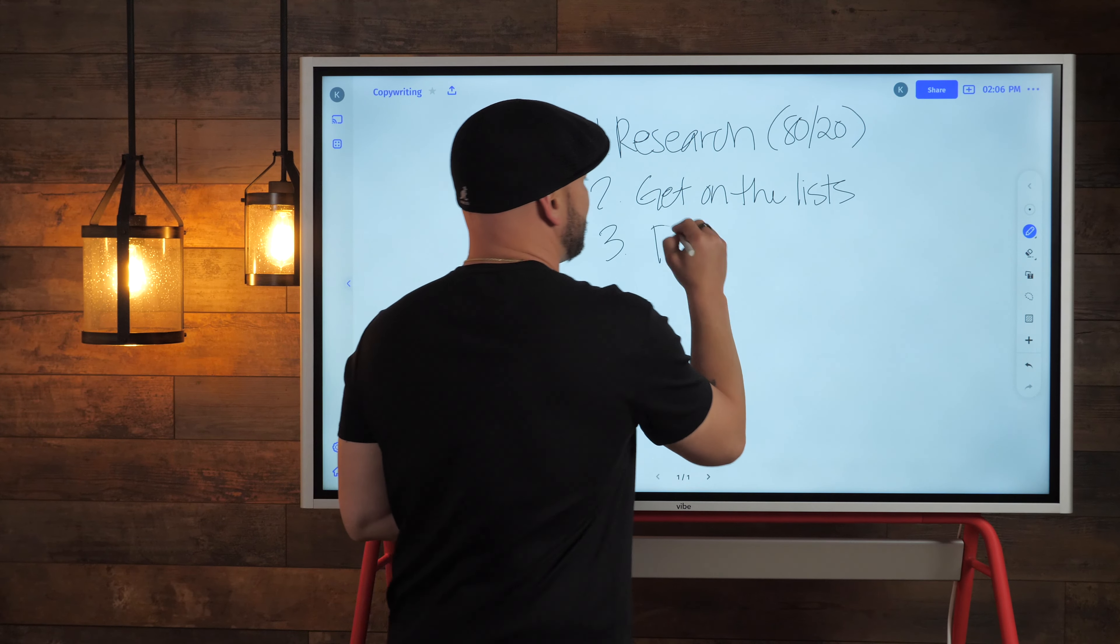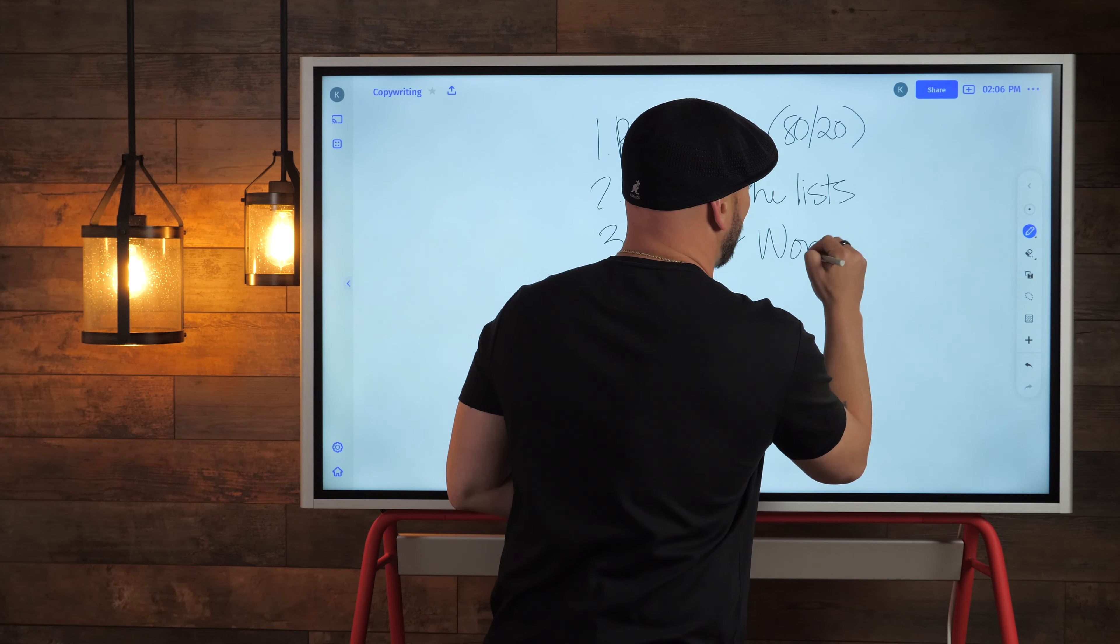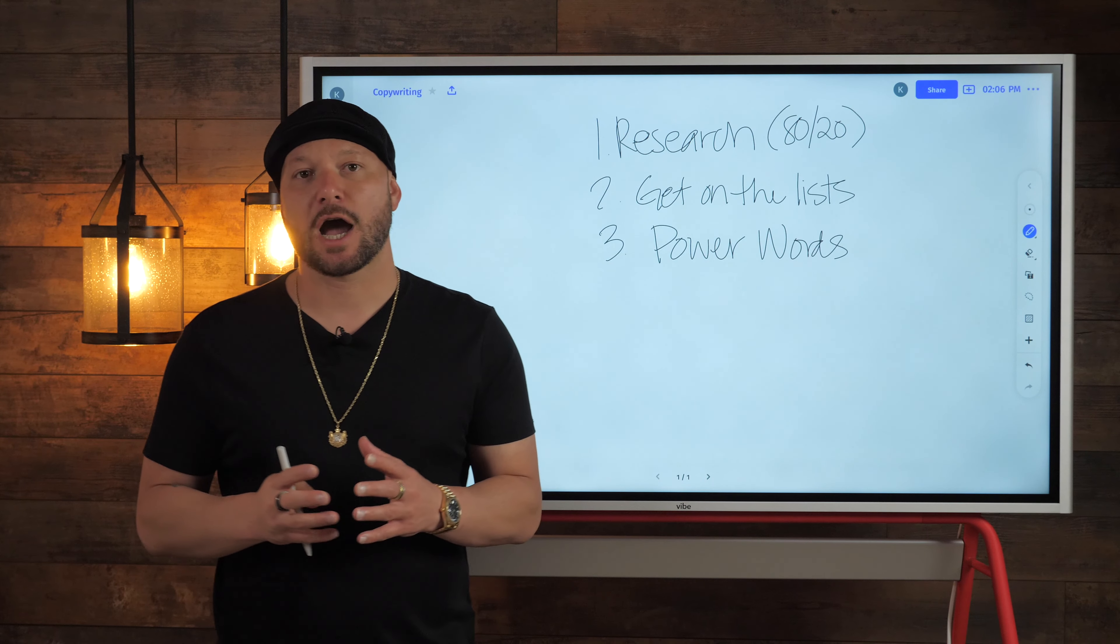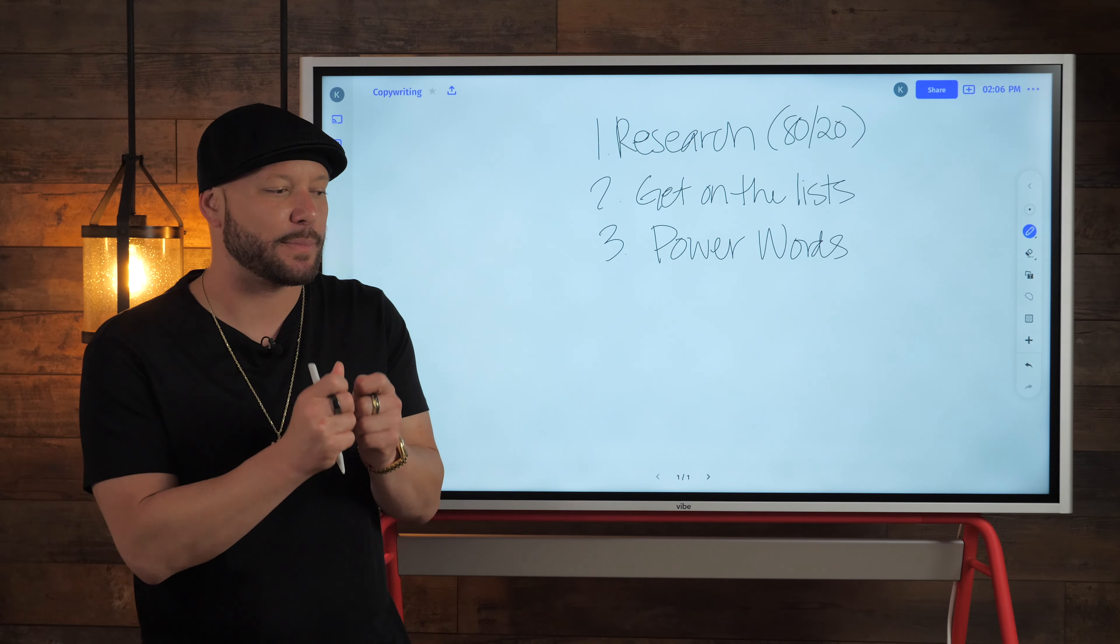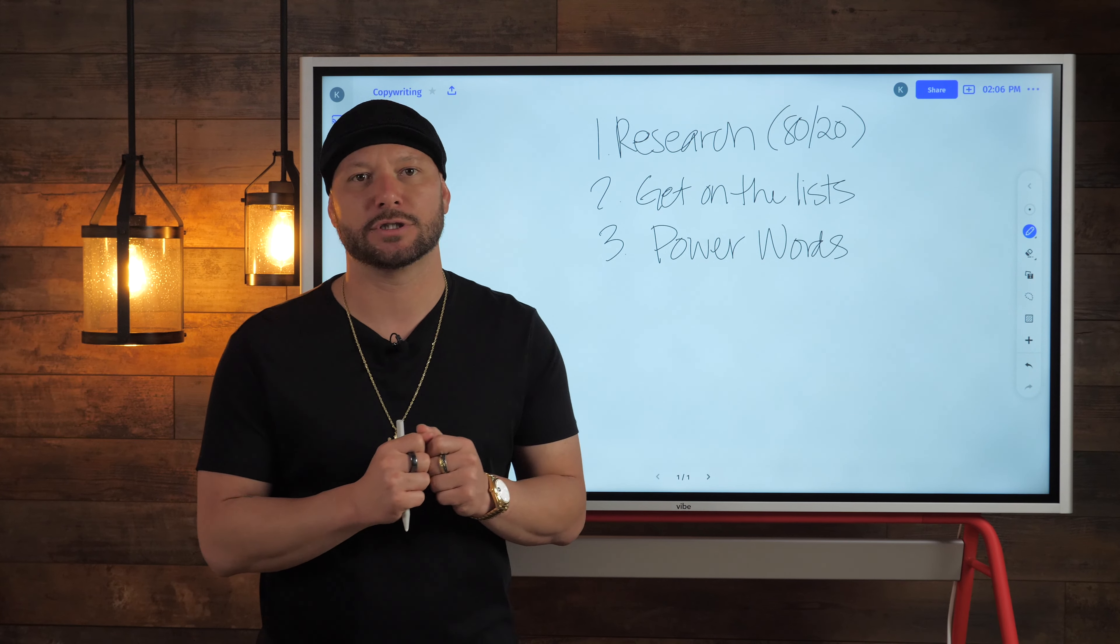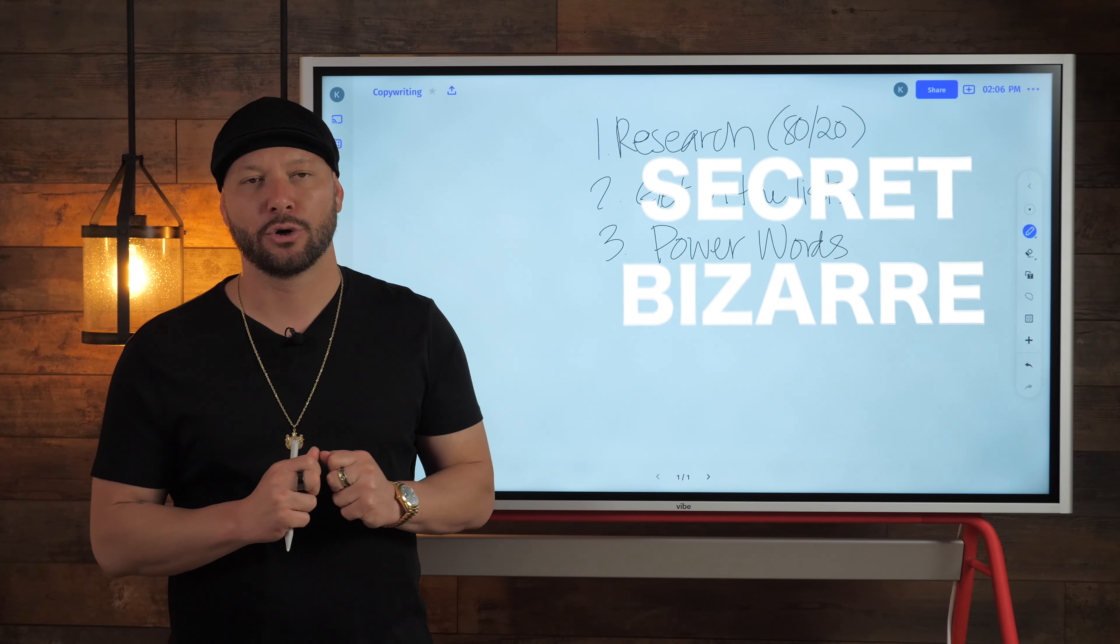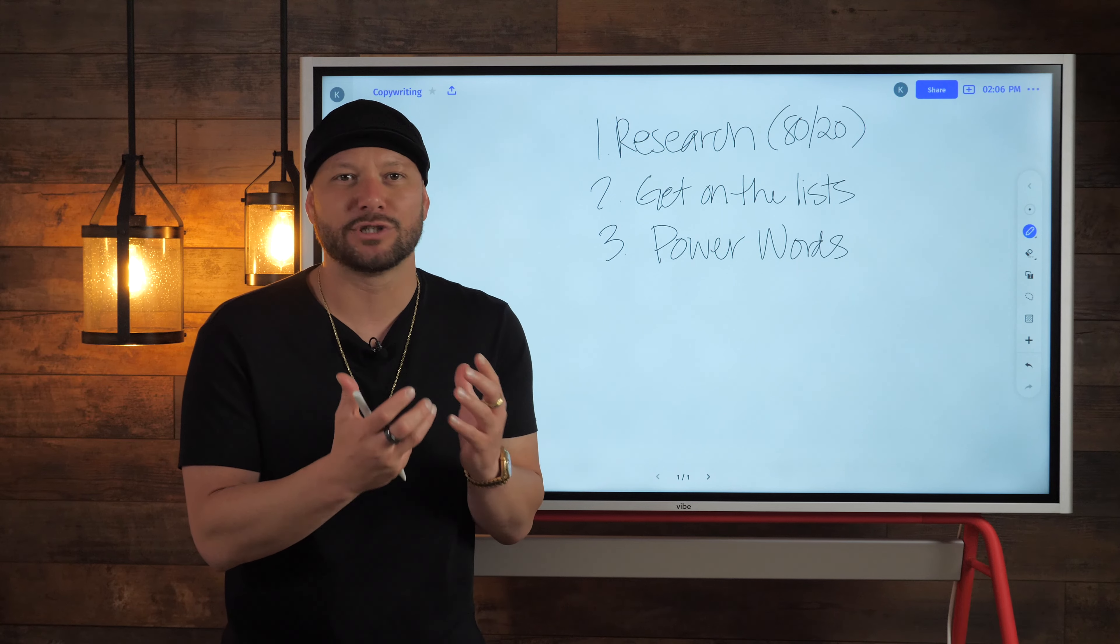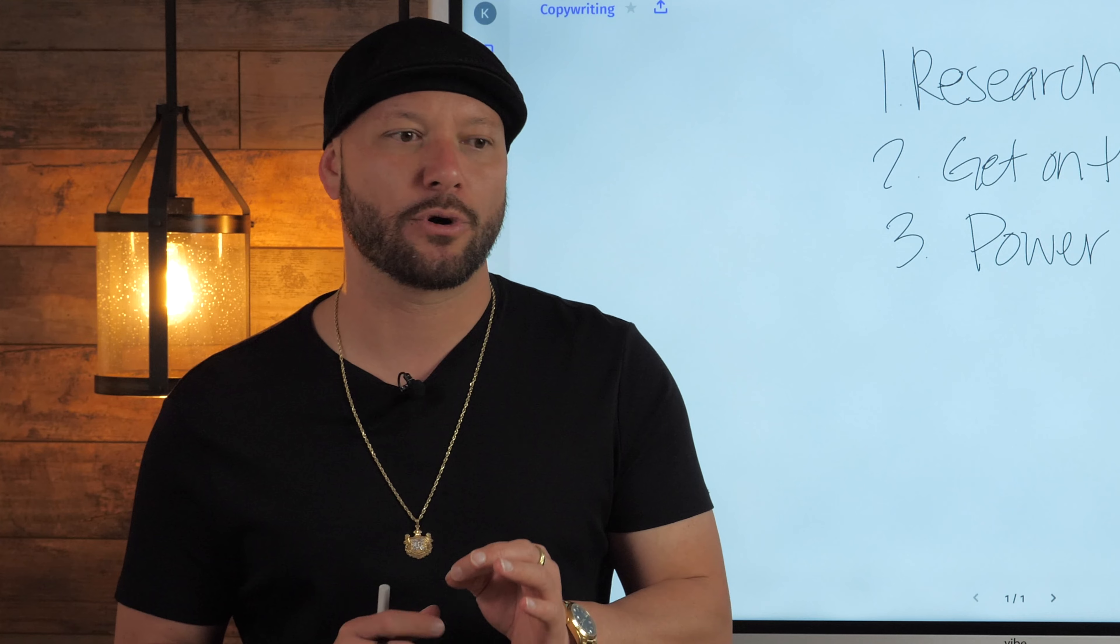All right, so tip number three is going to be to keep a swipe file of what I call power words. So any good copy, and this is kind of like a gray area, there's a blurry line because good copy can be spiced up with a few good trigger words that kind of hype up emotions, right, things like secret or bizarre or destructive. These are just words that carry, they're not words that we use in our everyday language so they can spice up your copy just a little bit.